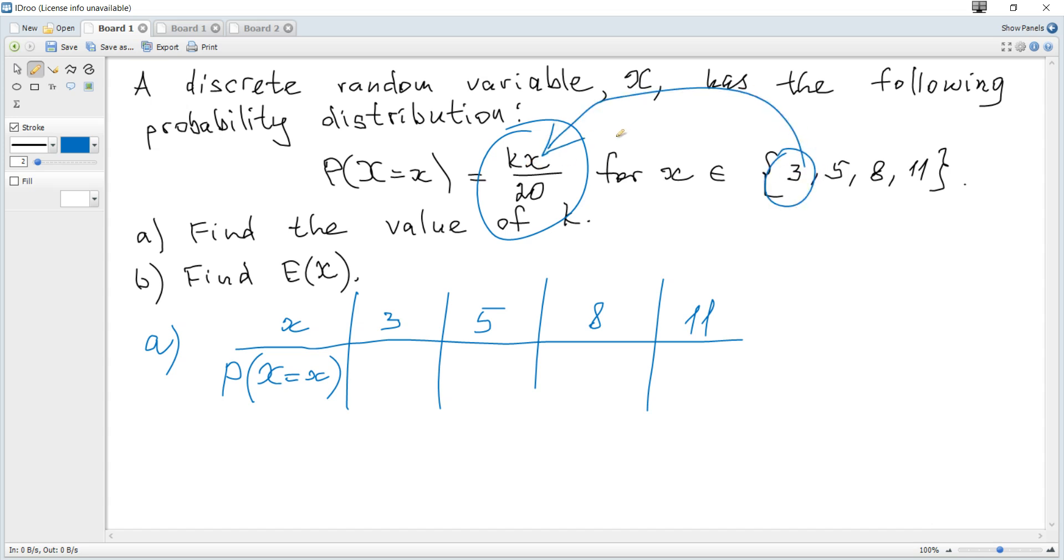For x is 3, you just substitute 3 for x and get that. For x is 3, the corresponding probability is 3k over 20. For x is 5, it's 5k over 20, 8k over 20, and 11k over 20.